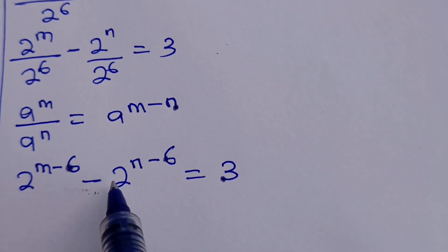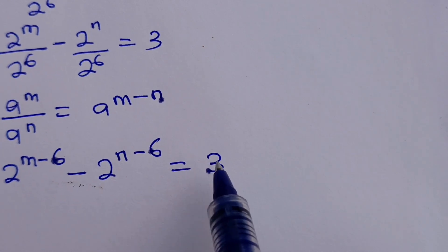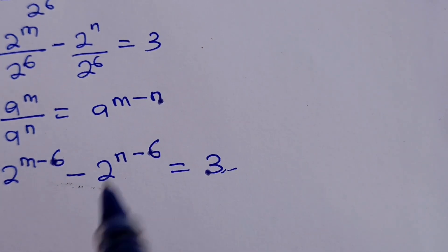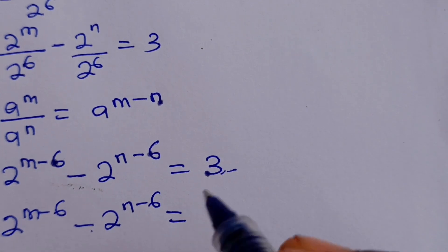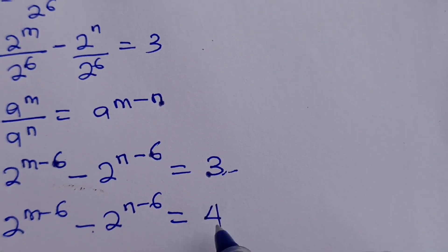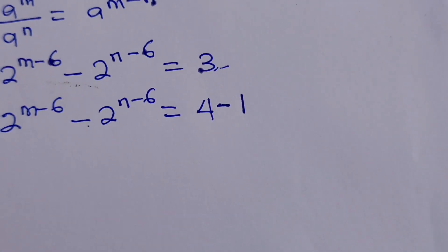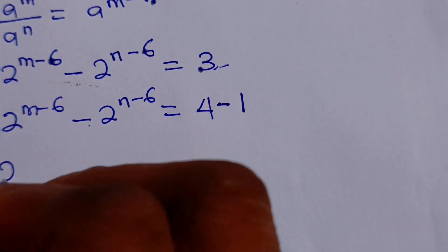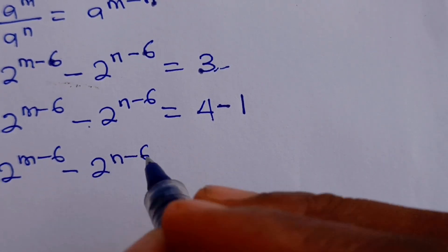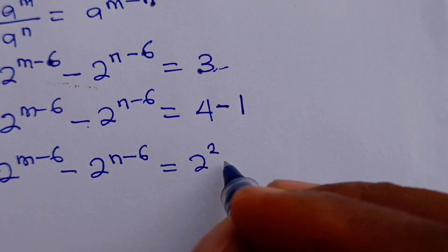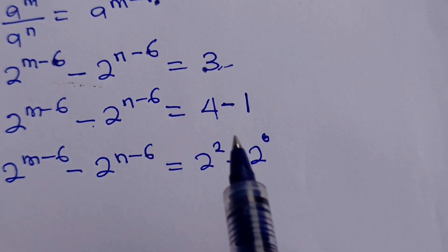Since we have base 2 on both sides, we can express 3 as 4 minus 1, which is 2 squared minus 1, and 1 is 2 to the power of 0. So we have 2 to the power of M minus 6, minus 2 to the power of N minus 6, is equal to 2 to the power of 2, minus 2 to the power of 0. Remember that any number to the power of 0 is 1.